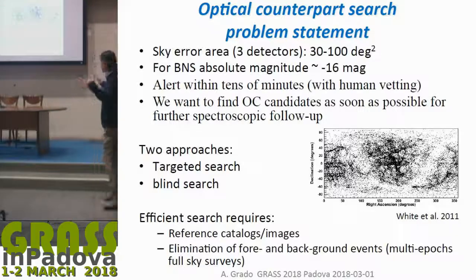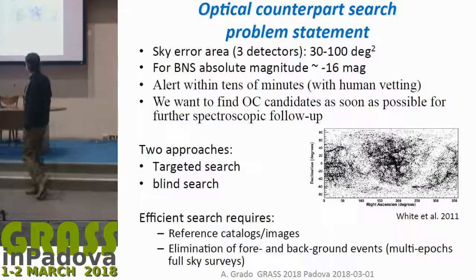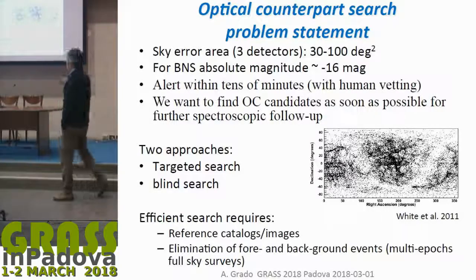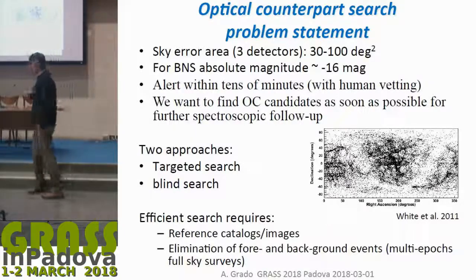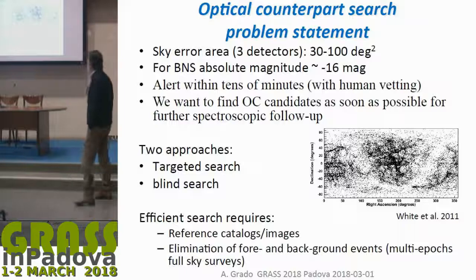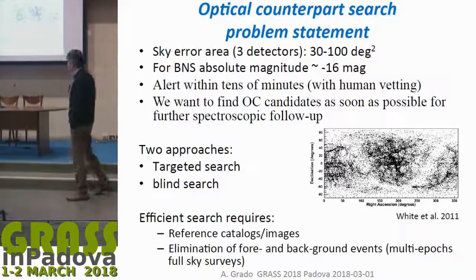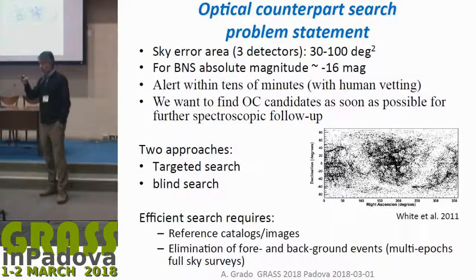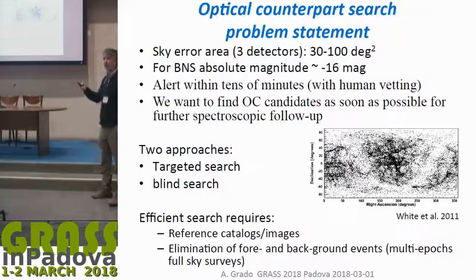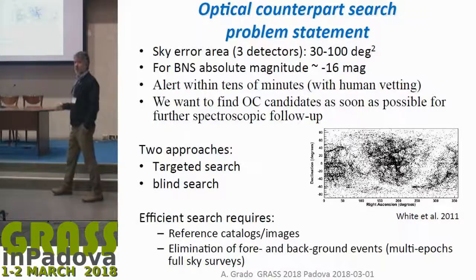We have 10 to 100 square degrees localization area. The absolute magnitude for a binary neutron star merger is around minus 16. The alert will come within 10 minutes, and we want to find possible optical counterpart candidates to do further spectroscopic follow-up. It was important — as seen in Enrico's talk — to follow the source spectroscopically and to be fast.